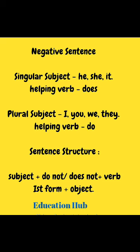The singular subjects — as I always explain — he, she: with these we use 'does'. And with plural subjects we use 'do'. The sentence structure is: subject + do/does not + first form of verb + object.